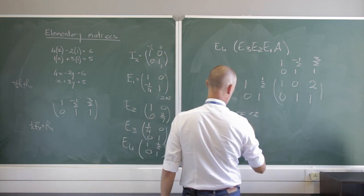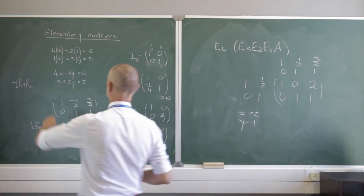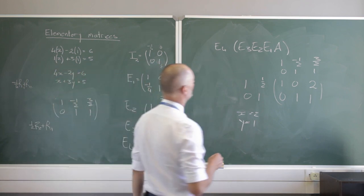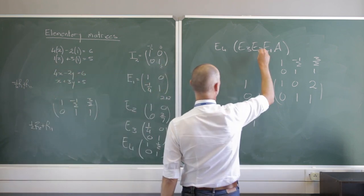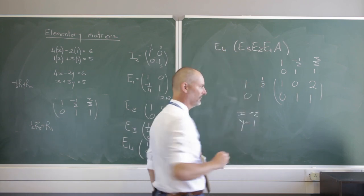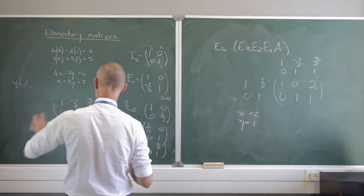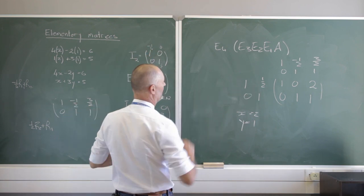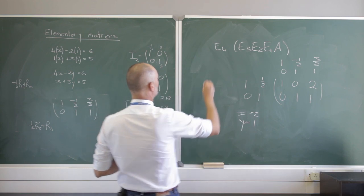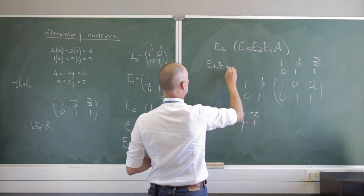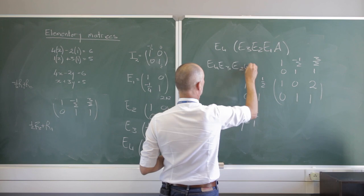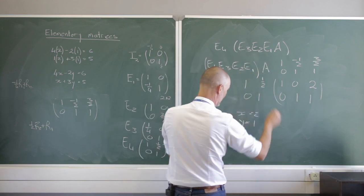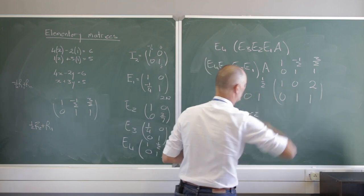What we've done is create a series of elementary matrices. Each elementary matrix captures the elementary row operation applied to an identity matrix, which we then multiply by A. Doing E4·E3·E2·E1·A brings us to reduced row echelon form.